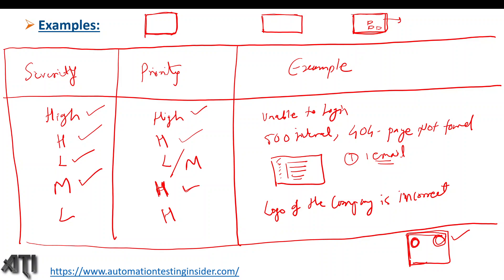Those are the various examples of priority and severity. If you still have questions, please let me know through comments in the comment box. If you liked this video, please share it, and if you are new to my channel, please subscribe and click the bell icon to get notifications for upcoming videos. Thank you so much for watching. In the next video we are going to talk about the defect life cycle. Have a nice day, bye!